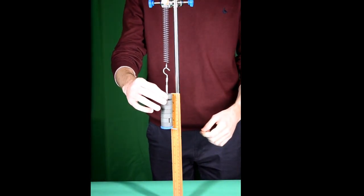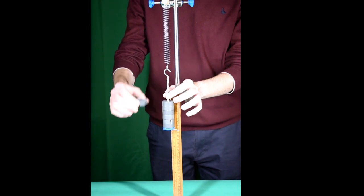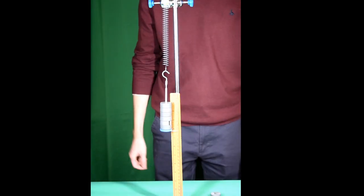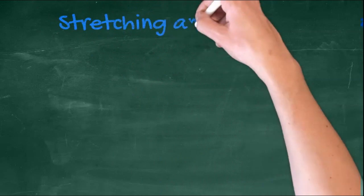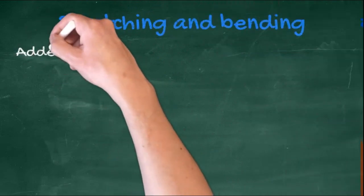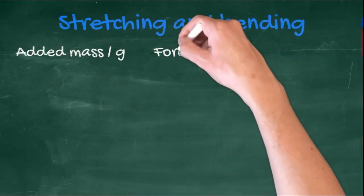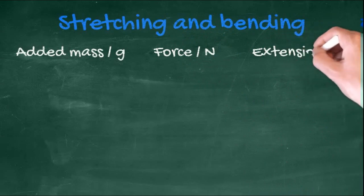To improve the experiment, the readings could be repeated as the masses are unloaded. And here are the results. Grams are converted to newtons by multiplying by the value of g.